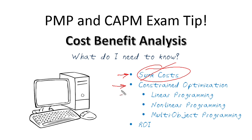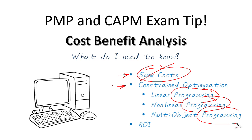Constrained optimization — there is a key phrase that you see in each one of these forms of constrained optimization. If you haven't figured it out yet, I've circled it right here: programming. If you are being asked about a way that deals with linear programming or nonlinear programming, what they're talking about is constrained optimization — or as a good friend of mine, Vicky Rona, says, 'fancy math.' It's a way for you to decide whether this project will benefit you based upon the costs, utilizing really cool programming or certain types of math optimizations.